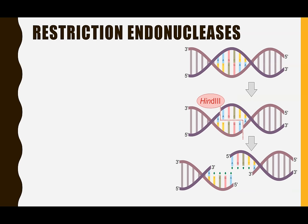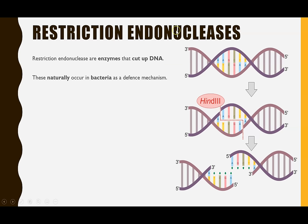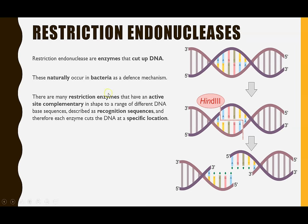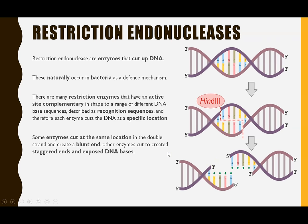Option two is restriction endonucleases — enzymes which cut DNA. They naturally occur in bacteria as a defence mechanism: if there is foreign DNA inside bacteria, these restriction endonucleases cut it up so it can't replicate and cause harm. There are many different types of restriction endonucleases and each has a slightly different active site complementary to a different range of DNA base sequences. The specific sequence where a restriction endonuclease cuts is called the recognition sequence or recognition site. Some enzymes cut a blunt end, cutting straight down the DNA molecule.